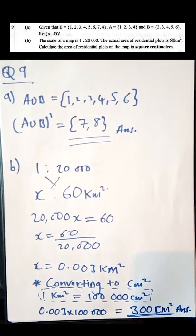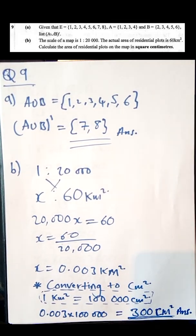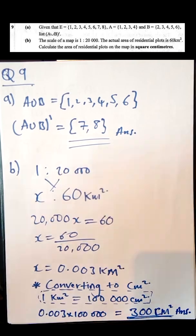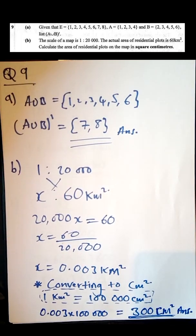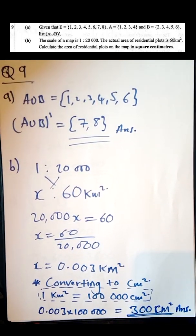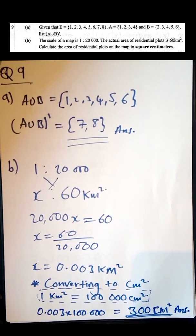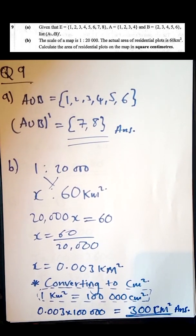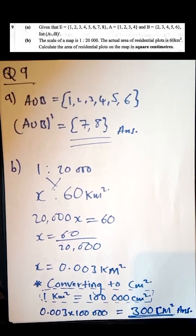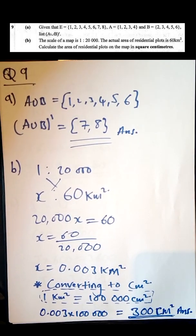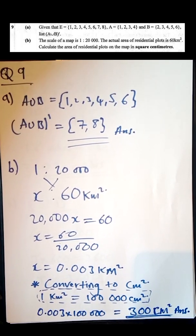Question number nine is under sets. You are given the universal set {1, 2, 3, 4, 5, 6, 7, 8}, set A = {1, 2, 3, 4}, and set B = {2, 3, 4, 5, 6}. You are asked to list (A ∪ B) complement.